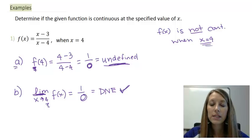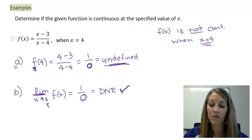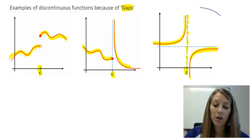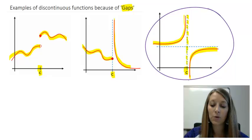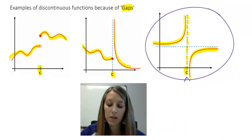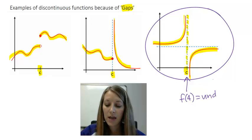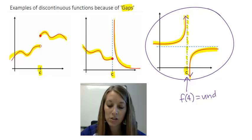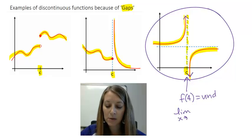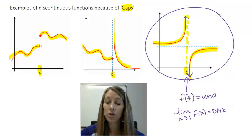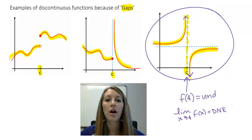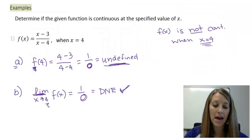For the visual, there is a vertical asymptote at x = 4. The graph on the left does not match the graph on the right, so f(4) is undefined. Since the left-hand limit does not match the right-hand limit, the limit as x approaches 4 does not exist. We actually have two reasons why the function is not continuous at x = 4.